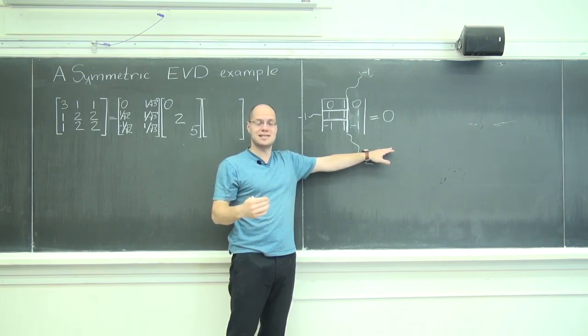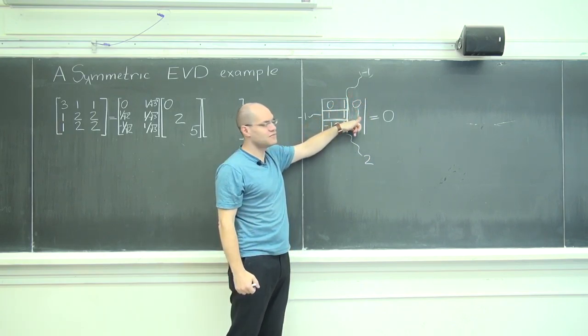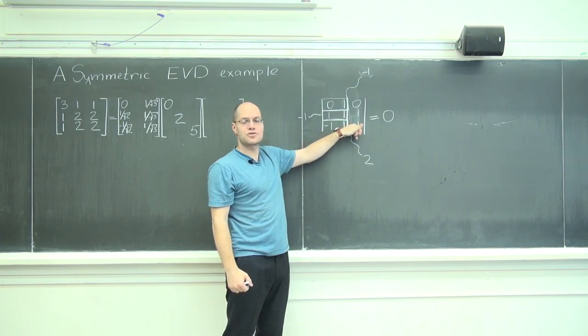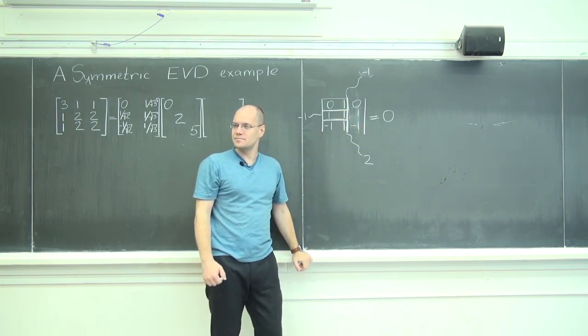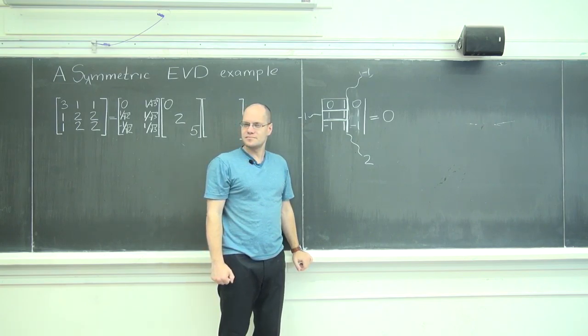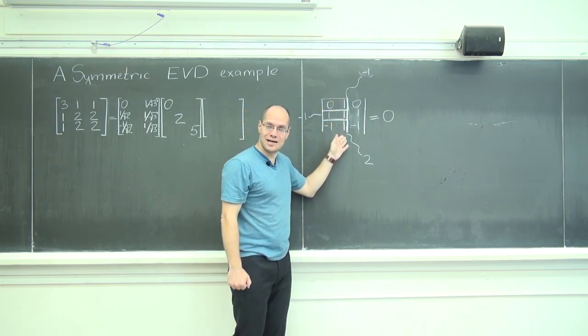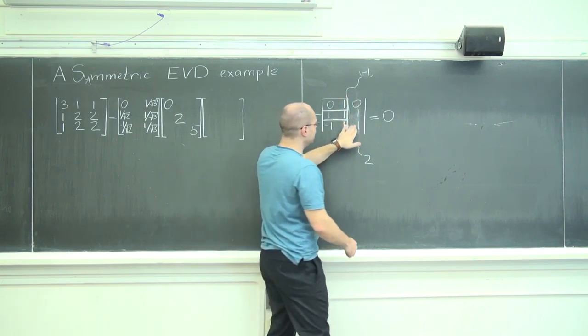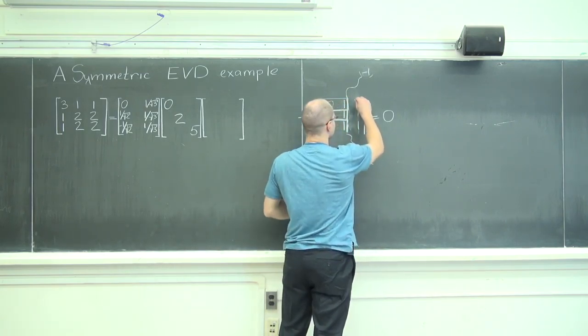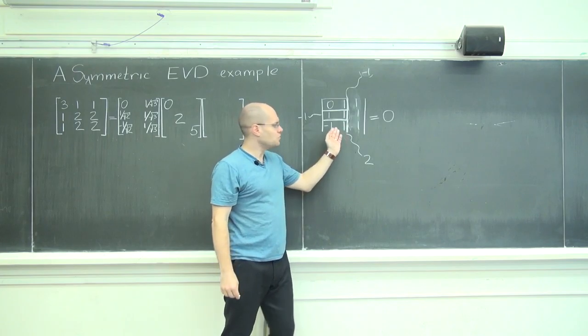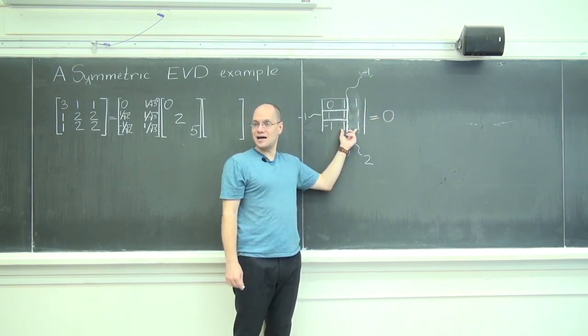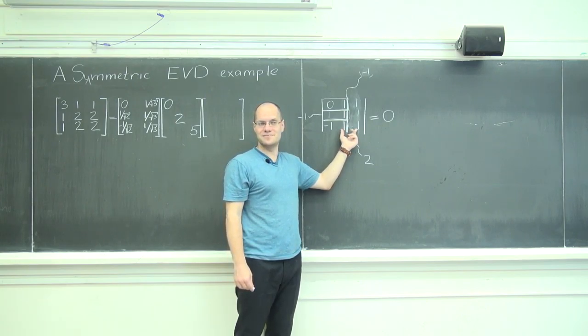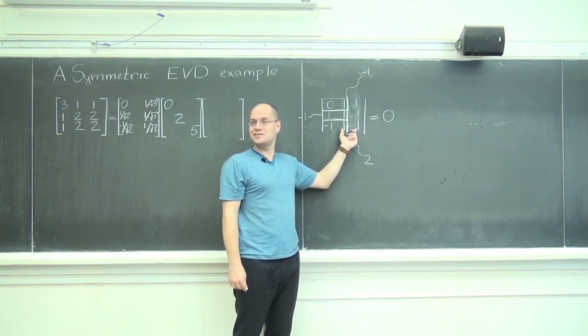So in other words, what it's saying is that 0, 1, negative 1 is orthogonal to, what was it, 2, minus 1, minus 1. And by the same token, 1, 1, 1, I could repeat the same argument. If I put 1, 1, 1 here, the determinant is once again 0. Why? Because there are two equivalent columns, so the columns are linearly dependent. Now let's interpret it from the Indian point of view.